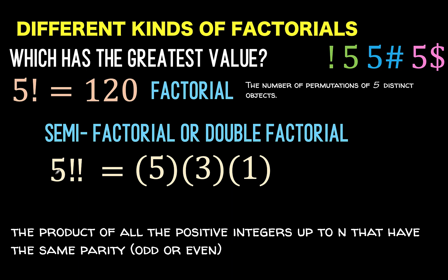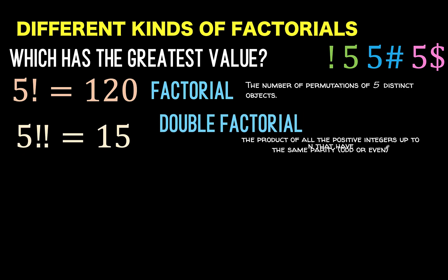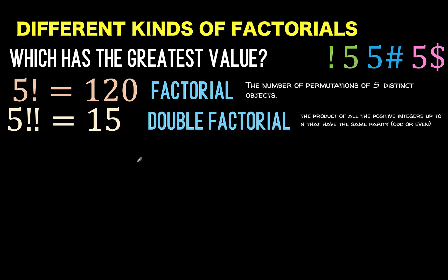We are going to multiply all the odd numbers from 1 to 3 up to n. But if this 5 happens to be 6, which is an even number, then you are going to multiply 6 times 4 times 2. And this is equal to 15. So the semi-factorial or the double factorial of 5 is 15. This has some applications in series in calculus.